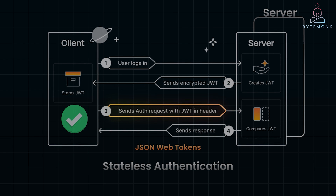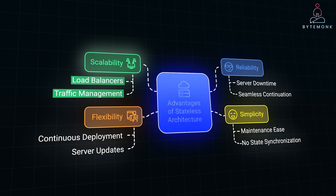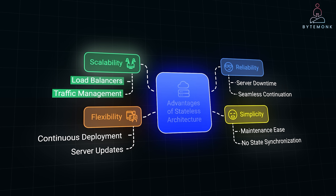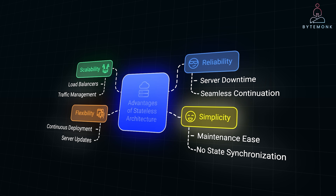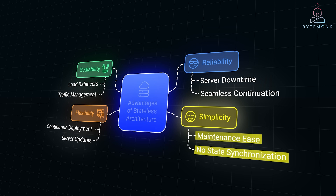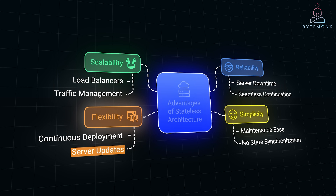The main advantages of stateless architecture are that since no session data is stored on individual servers, you can easily add more servers to handle increased traffic. Load balancers can distribute requests without worrying about session affinity — that is, keeping a user tied to the same server. And if a server goes down, it doesn't impact user sessions because no critical session data is lost; other servers can seamlessly continue handling requests. Stateless systems are generally easier to maintain — there is no need to synchronize session data between servers or manage complex state replication. Developers can deploy updates or make changes to servers without affecting user sessions, enabling continuous deployment practices.